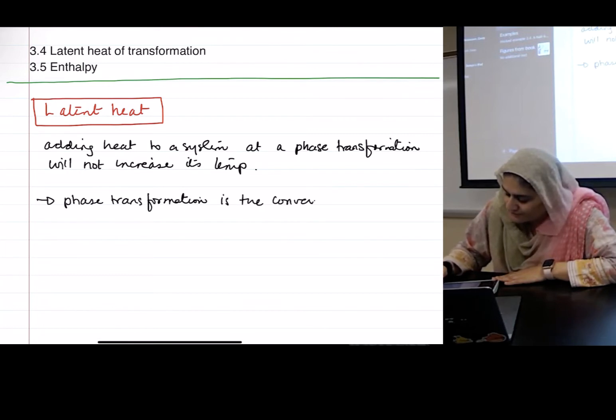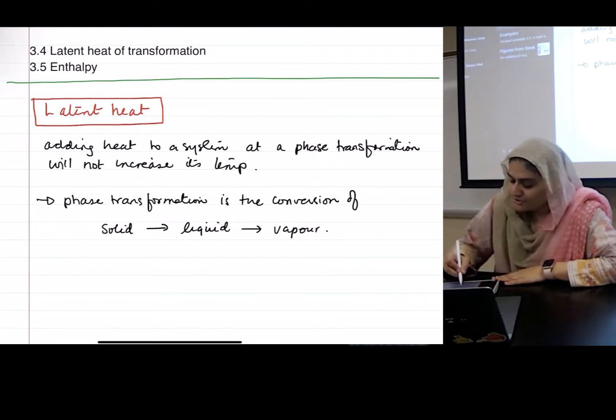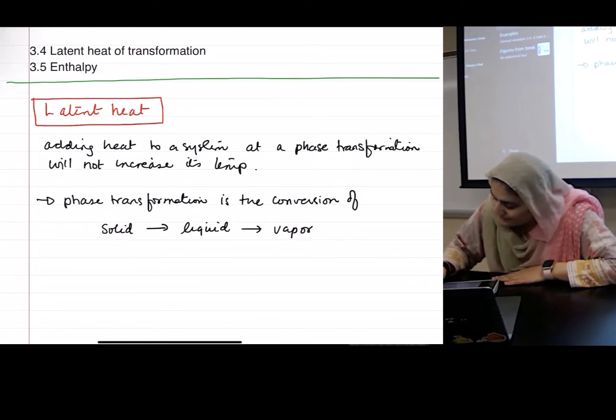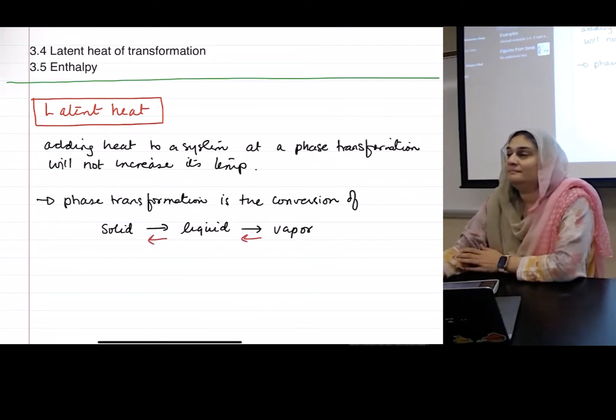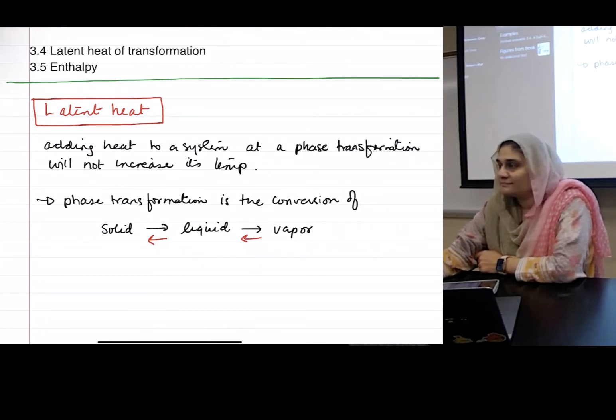Phase transformation is the conversion of solid to liquid to vapor, or backwards. Yeah same thing I'm just doing a very broad one right now. Sublimation is going from vapor to solid or the other way around, but just phase changes.